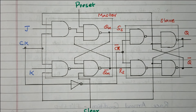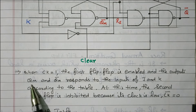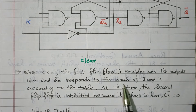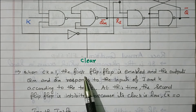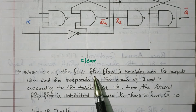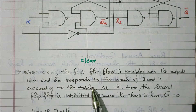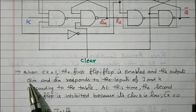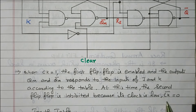Now we will see the description one by one. When the clock pulse equals 1, the first flip-flop is enabled and the outputs QM and QM-bar respond to the inputs J and K according to the truth table. When the clock pulse is 1, only the first flip-flop is enabled because the second flip-flop receives the inverted clock, so the clock pulse becomes 0 for the second flip-flop. Based on the truth table, the values of J and K determine the output present state and inverted present state. At this time, the second flip-flop is inhibited because its clock pulse is 0.